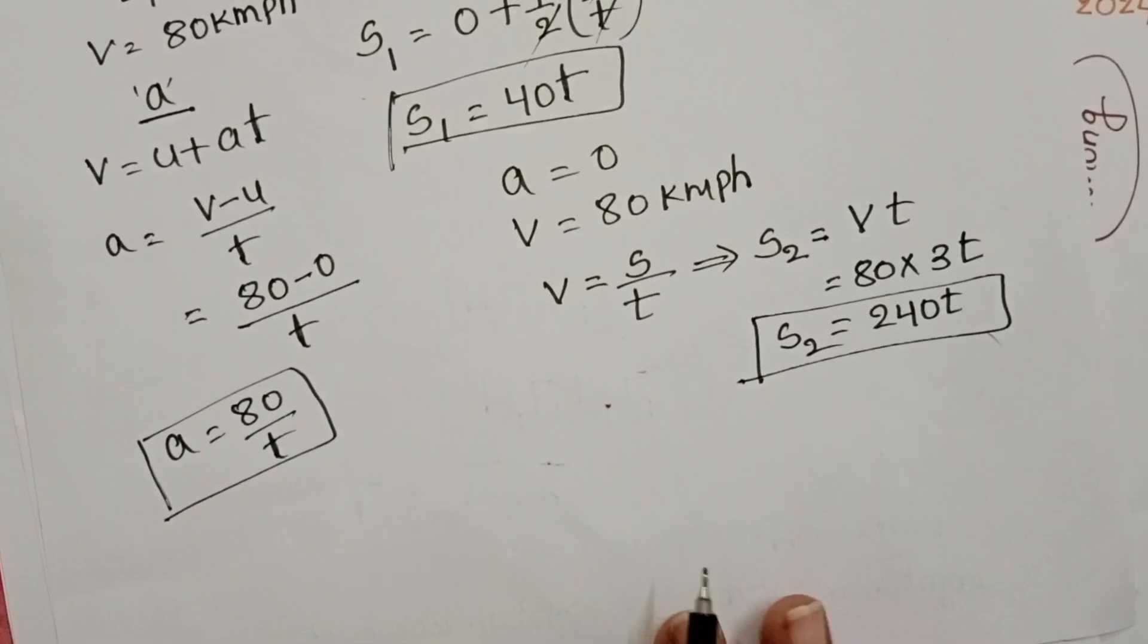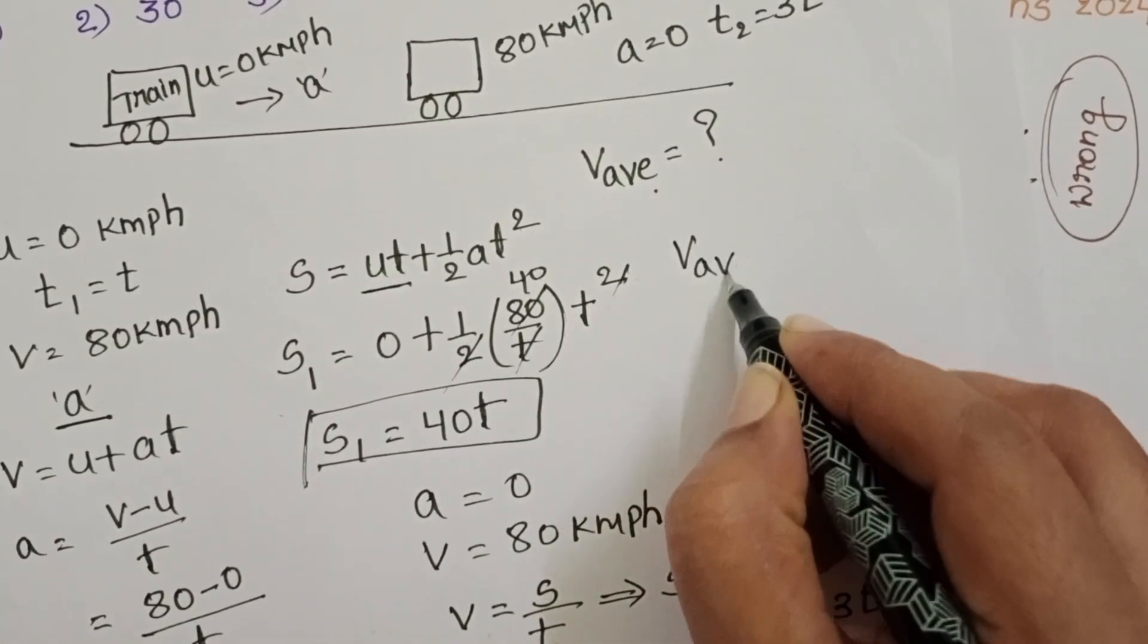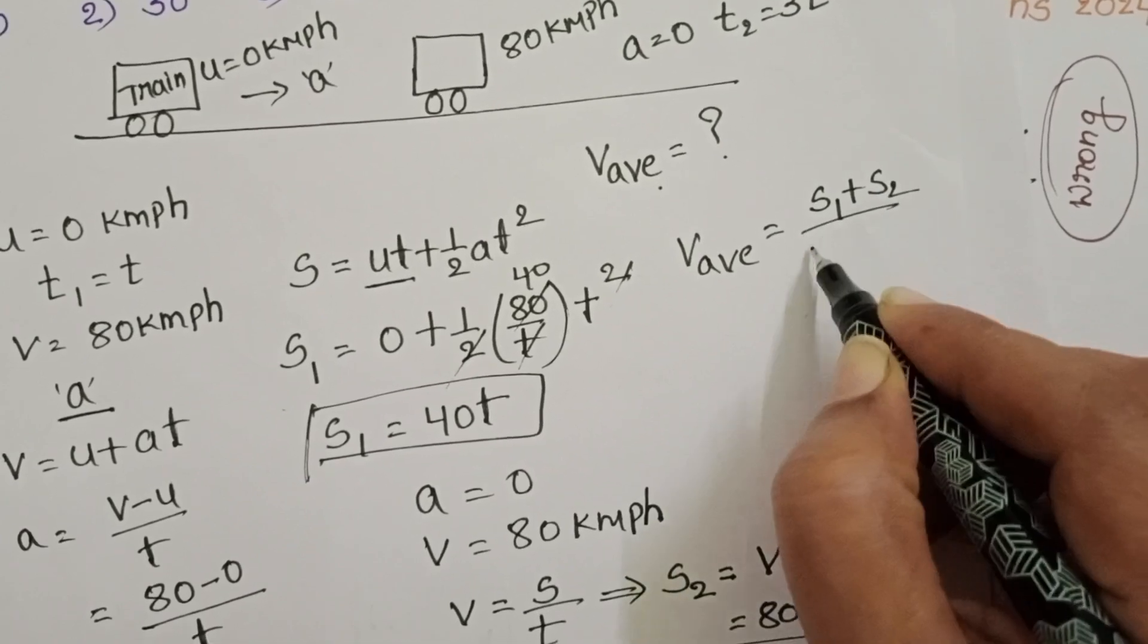Finally what we want? Average speed. Average speed is equals to total distance by total time.